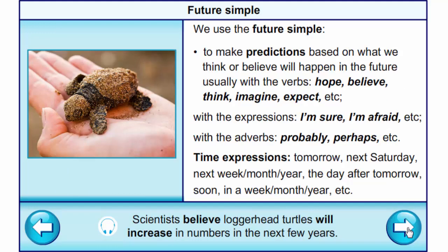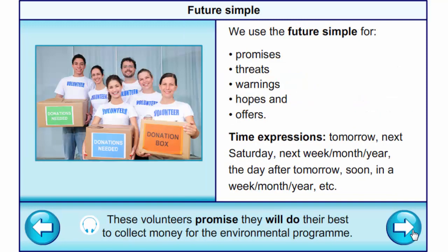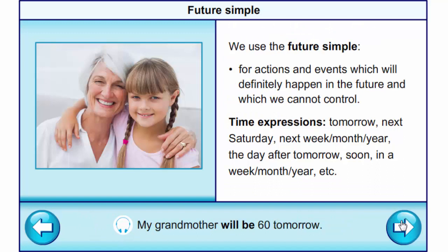We also use future simple to make predictions based on what we think or believe will happen in the future, usually with the verbs hope, believe, think, imagine, expect; with the expressions I'm sure, I'm afraid; with the adverbs probably, perhaps, etc. Example: Scientists believe loggerhead turtles will increase in numbers in the next few years. We use it for promises, threats, warnings, hope and offers. Example: These volunteers promise they will do their best to collect money for the environmental program. We also use future simple for actions and events which will definitely happen in the future and which we cannot control. Example: My grandmother will be 60 tomorrow.